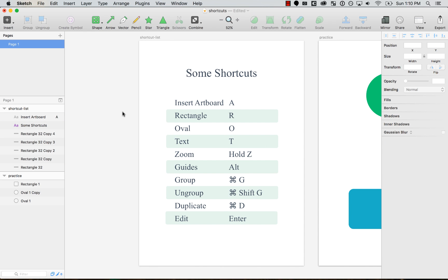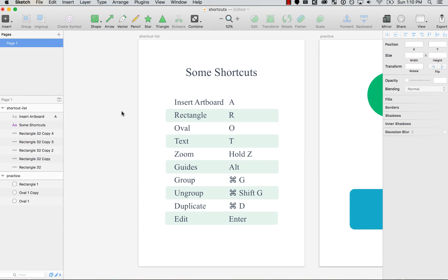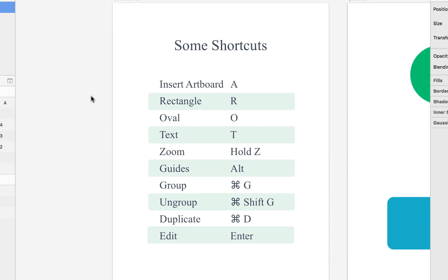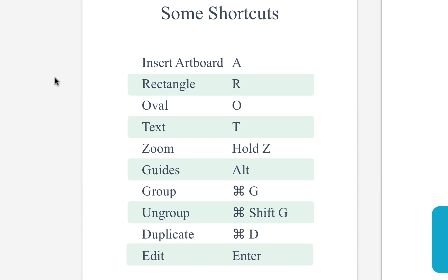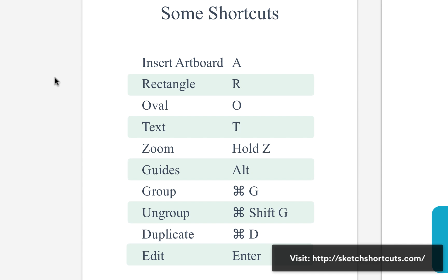Probably you already know some of the shortcuts that you can use — like inserting an artboard, you just press A; rectangle on R; create a circle, you press O; and so on. I recommend going to sketchshortcuts.com. There's a huge list of all the shortcuts that Sketch has.